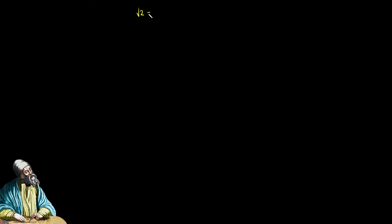I'll begin by trying to keep the Pythagoreans happy. My assumption is that there really are two whole numbers whose ratio equals root 2. I'll call the numbers C and D.